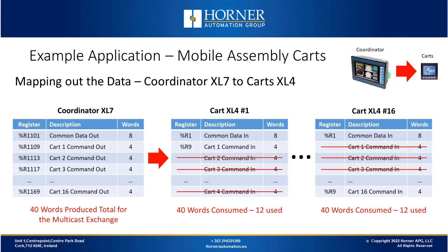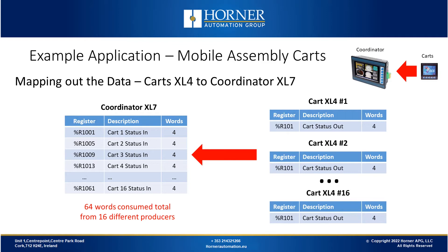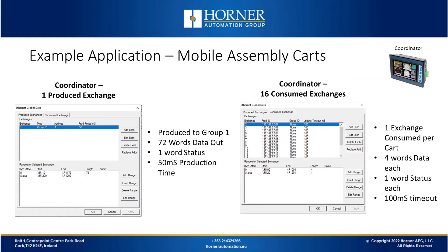Let's map out the data and see what that looks like. Starting with our coordinator XL7, the command data is sent out to all the carts. Every cart receives that message of data every 100 milliseconds and using some logic it will only use the data it cares about. Every cart will have some common command data stored in register 1 for example, and then another bank of registers with individual commands specifically targeted for that particular cart. For data going in the other direction, every cart is sending status to the network as a single exchange. The coordinator XL7 is receiving that status information through 16 different exchanges and mapping that information.